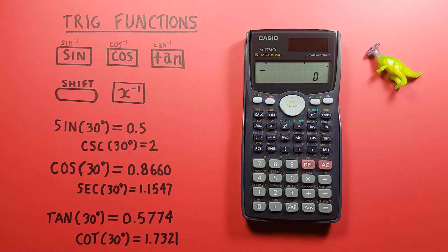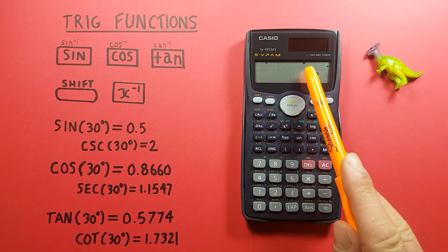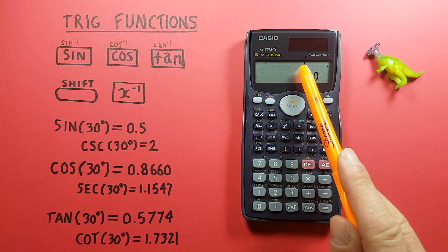Getting started, these examples will be in degrees so we want to make sure our calculator is set to degrees. We can confirm this by seeing a little D in the top row there.